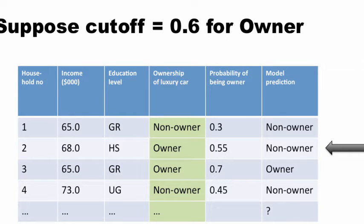If you had 0.6 as a cutoff, then a case with probability 0.55 — which was being classified as an owner at the 0.5 cutoff — would now get classified as a non-owner. The way you choose the cutoff depends on your relative costs and benefits. If you're more willing to make a mistake in favor of somebody being an owner, your cutoff could be lower, such as 0.3, because the cost of missing a true owner may be much higher.